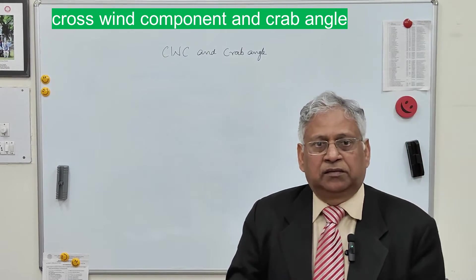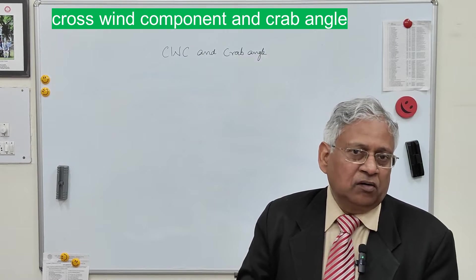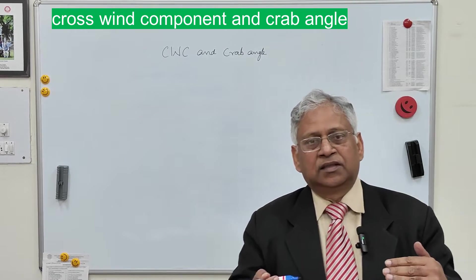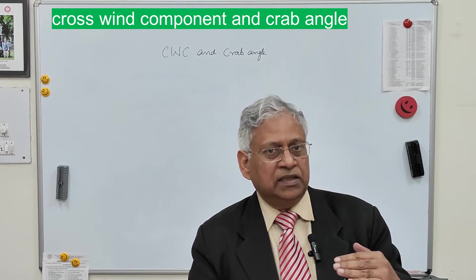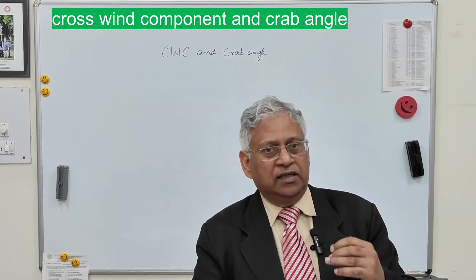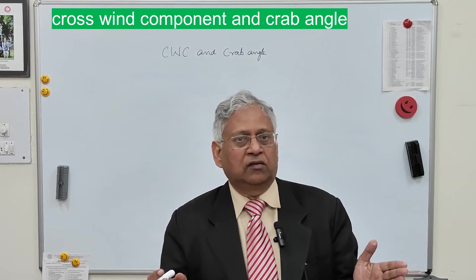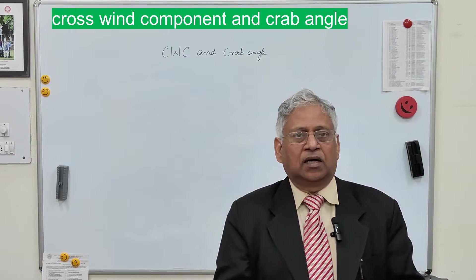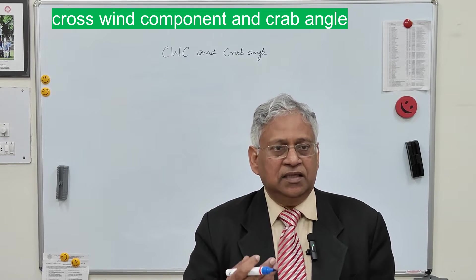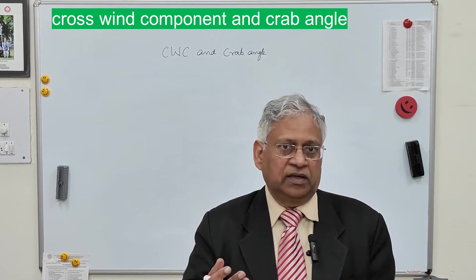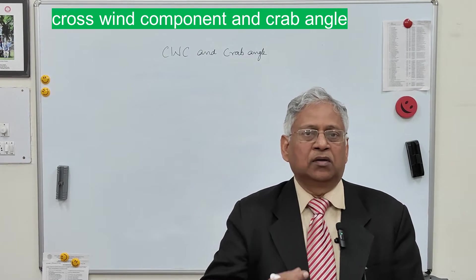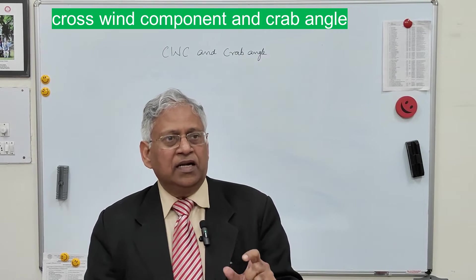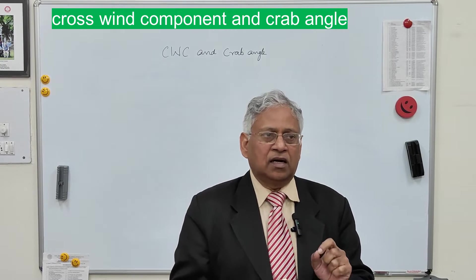The direction of wind plays a very important role during takeoff and landing operations of an aircraft. If landing is done against the direction of the wind, this wind provides an additional braking effect and the aircraft comes to a stop within a shorter length of runway. Similarly, if takeoff is done against the headwind, the wind provides more lift to the wings and the aircraft can rise above the ground in a shorter runway length.